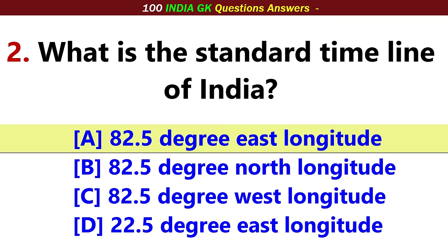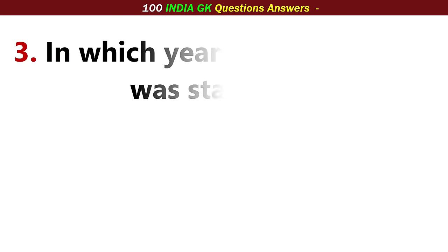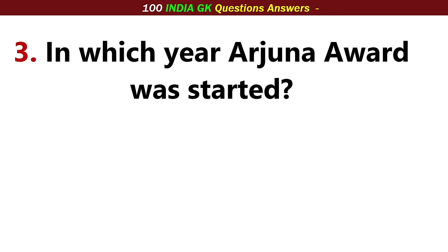What is the standard timeline of India? Option A: 82.5 degree East Longitude.